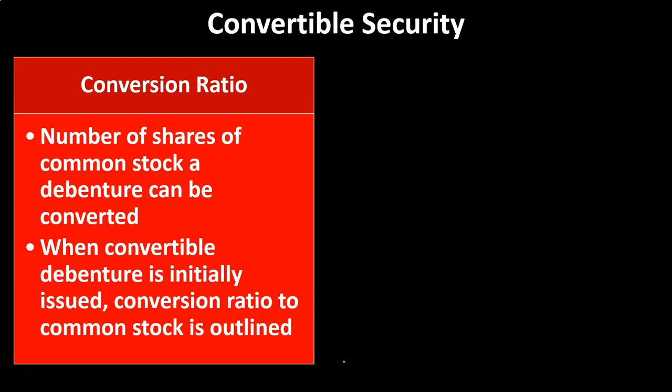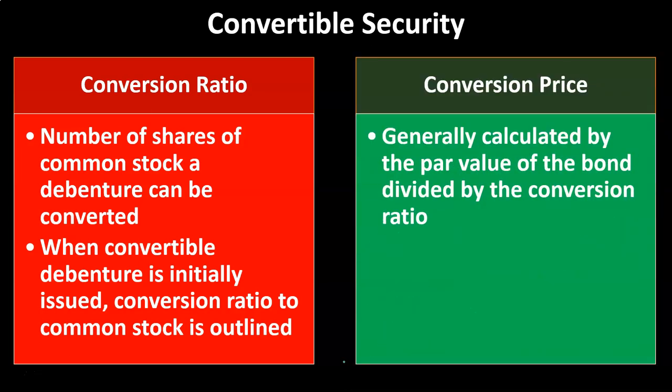Convertible securities have a conversion ratio — the number of shares of common stock a debenture can be converted into. When a convertible debenture is initially issued, the conversion ratio to the common stock is outlined. So if you're talking about convertible bonds, the conversion ratio defines how many stocks that convertible bond can be converted into.